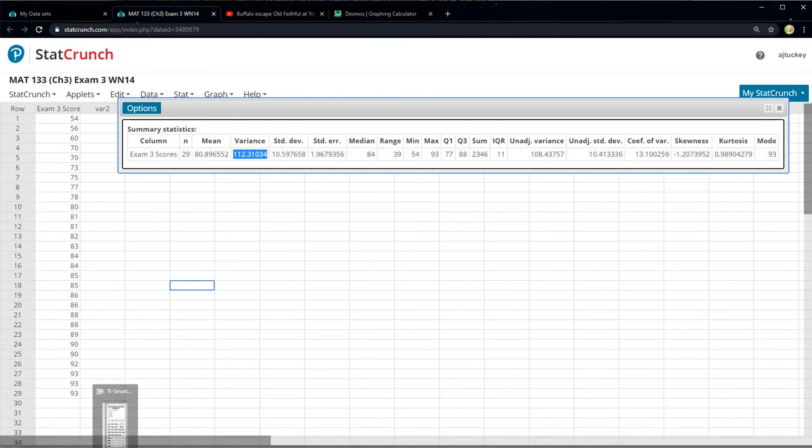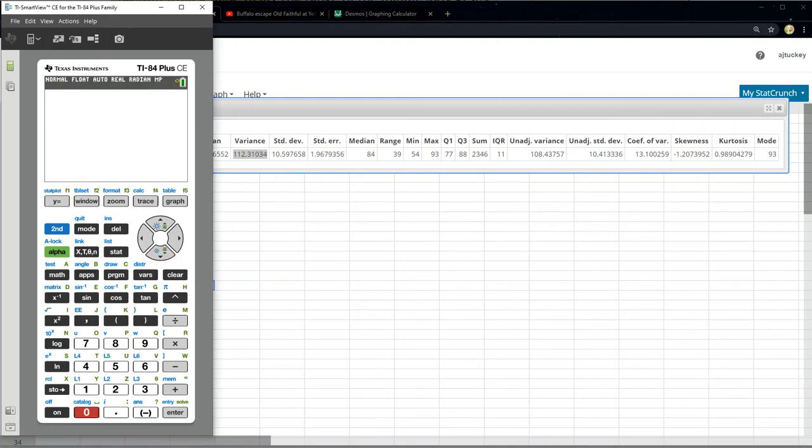That'd be 10.598 squared, which of course we could find, or if we used StatCrunch, StatCrunch found it for us. The variance is 112.31 roughly. And again, you could find that with a calculator if you took 10.598 and square it. There's a slight rounding error there.